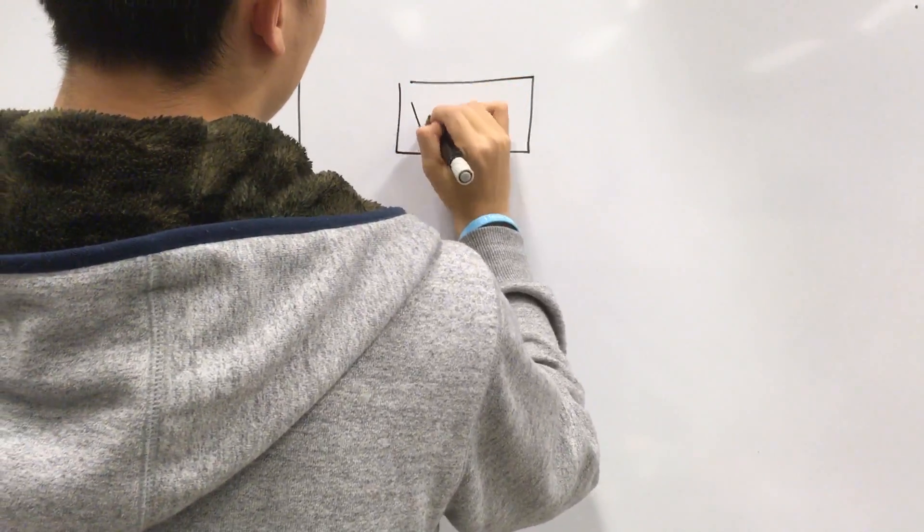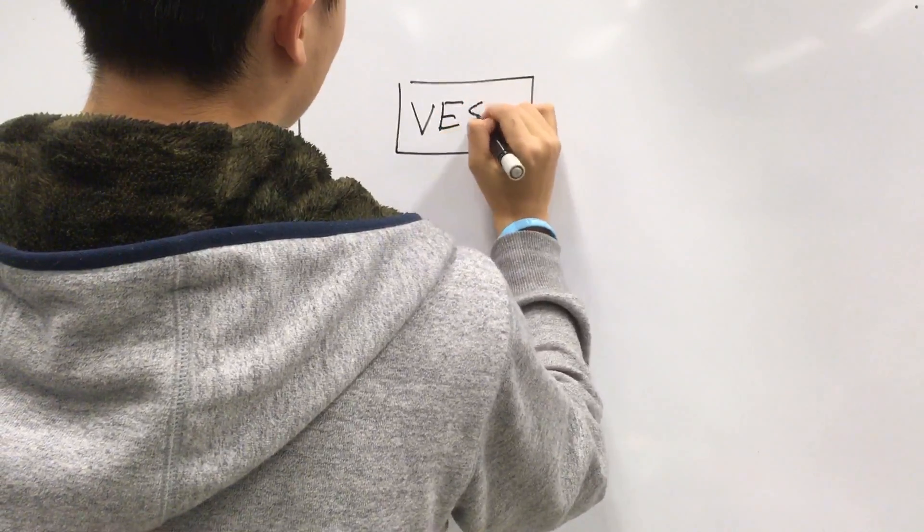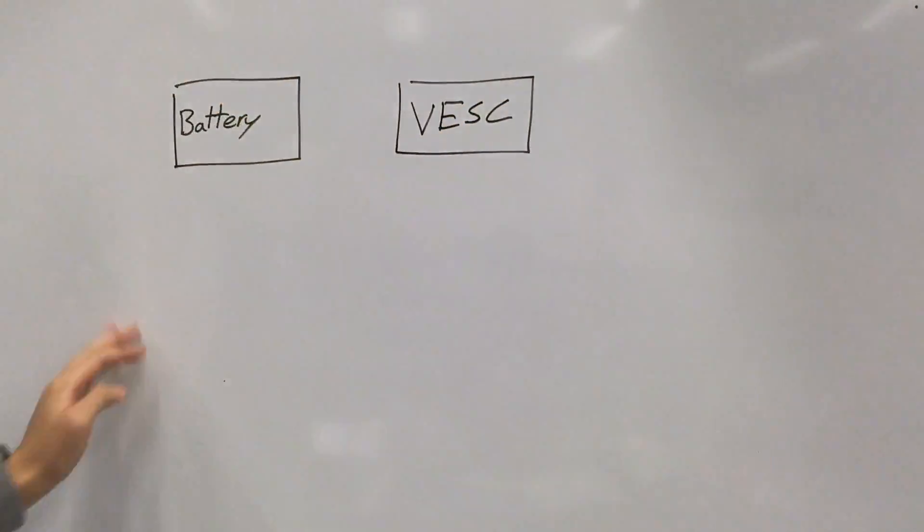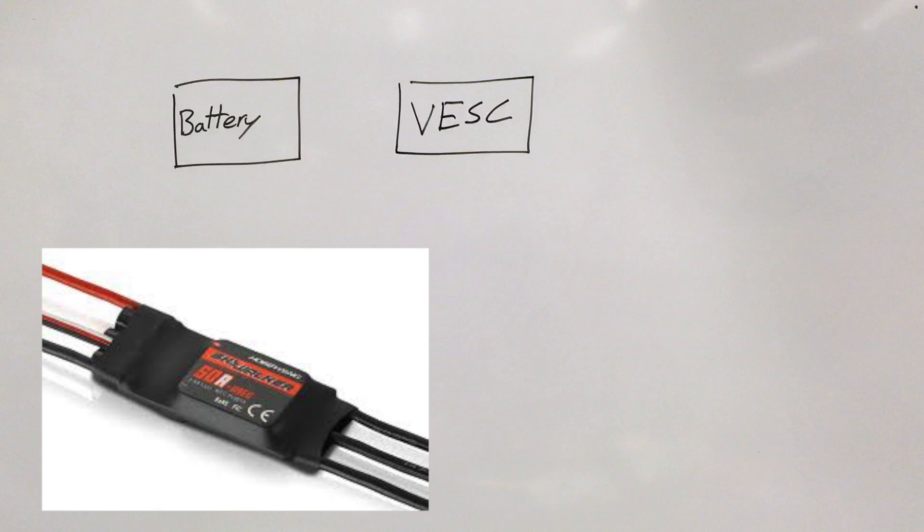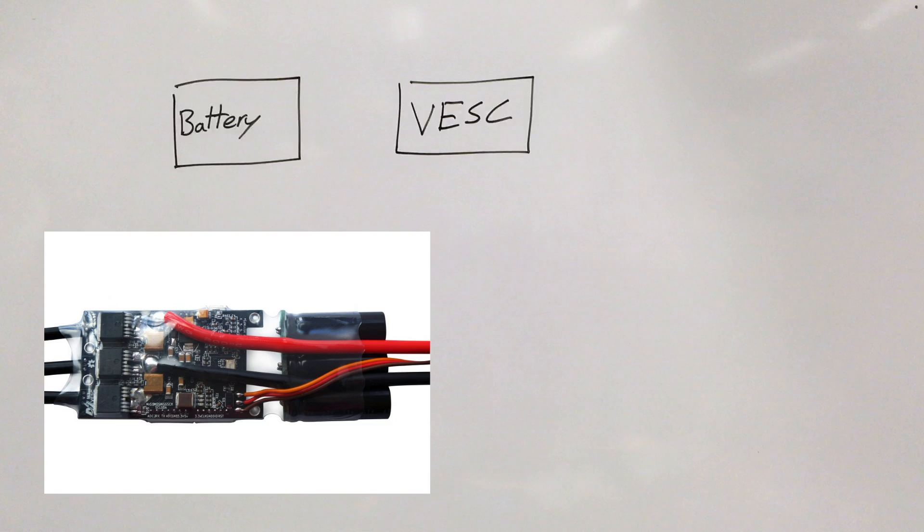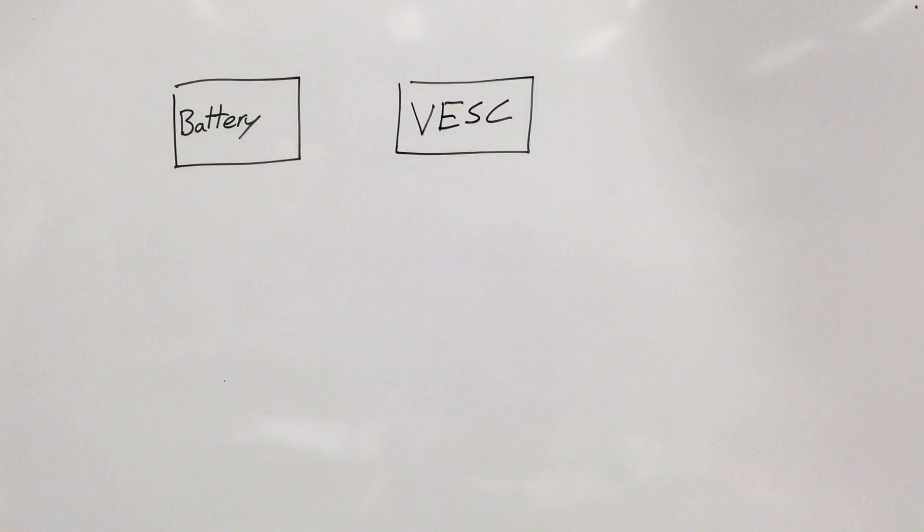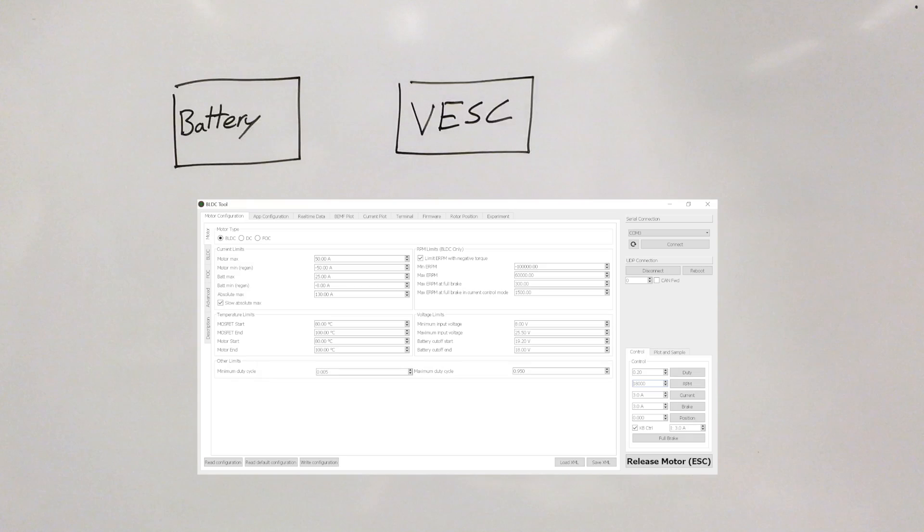Now the battery connects directly to the VESC, so the variable electronic speed control. There's actually originally the thing was called an electronic speed control, but the electric skateboard community created a variable electronic speed control. The difference between these two is actually really big.